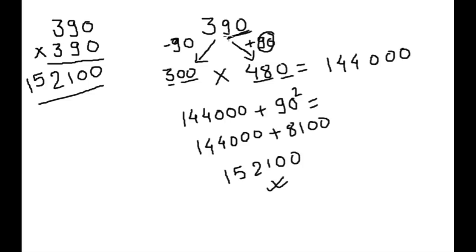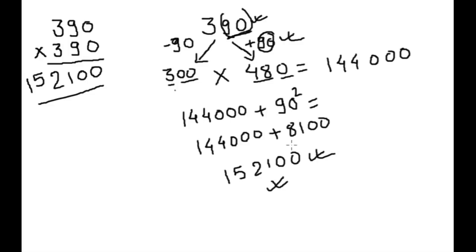So first we subtract and do addition of the last 2 digits, then we multiply, do addition of this result, and add the square of the last 2 digits — and that is the answer. Let's take another example.